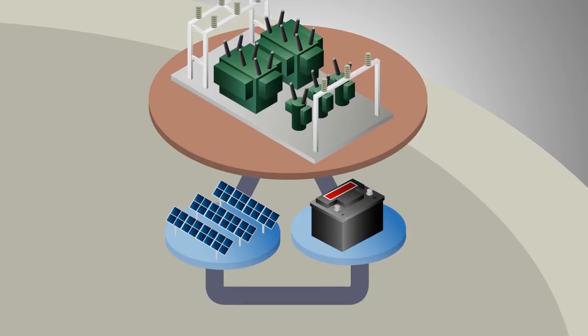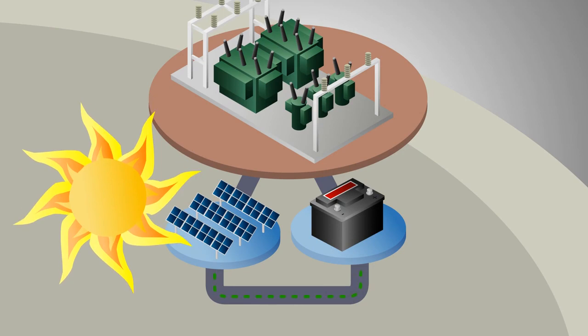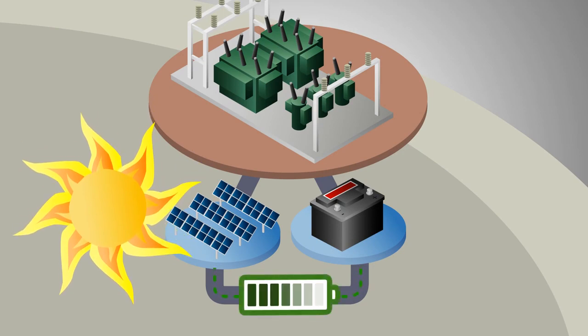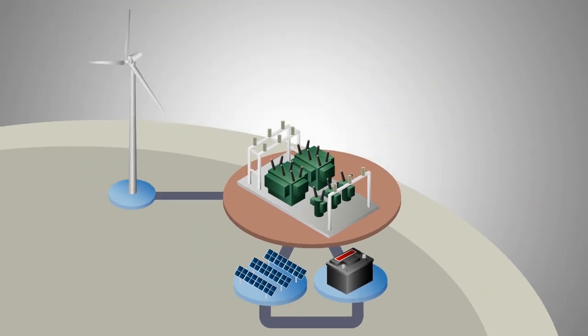When there is excess solar power available, the batteries begin charging. The batteries store this power that can be used later if the PV output drops below acceptable levels, making DER energy delivery more consistent and reliable.